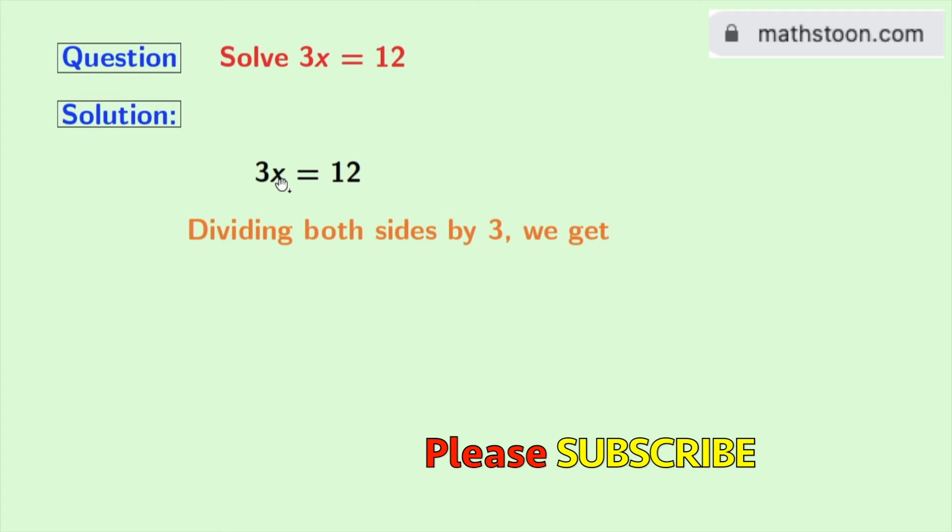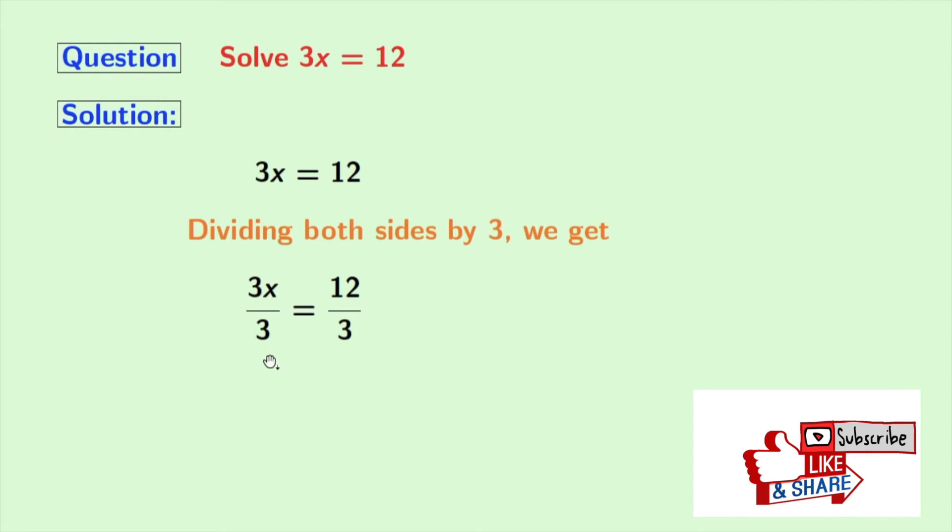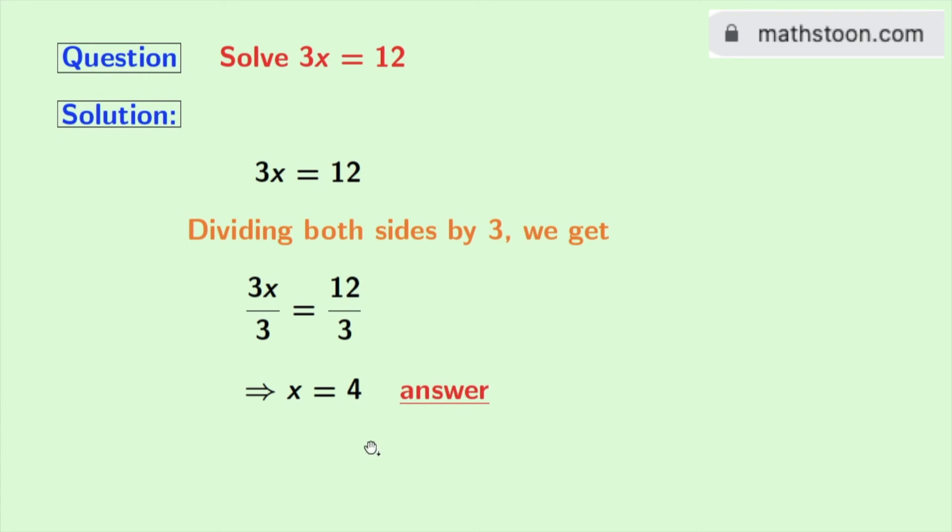Doing that we get 3x by 3 is equal to 12 by 3. Look at, in the left hand side 3 and 3 get cancelled and we are left with x. And in the right hand side 12 by 3 is equal to 4. So we have 4. So finally we get x is equal to 4 as our answer.